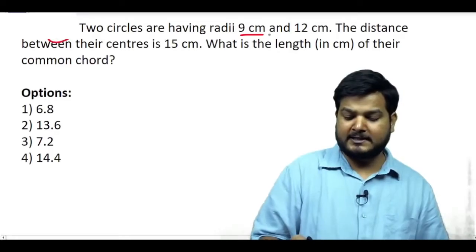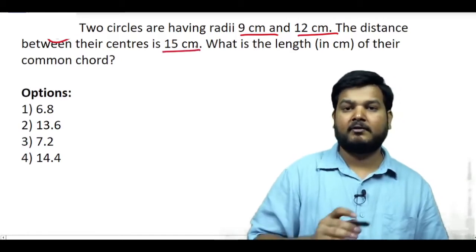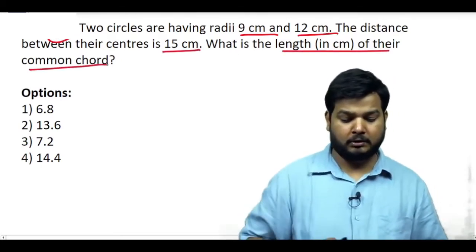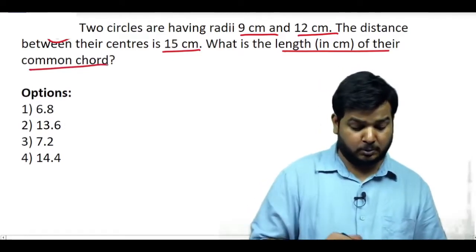Two circles are having radii 9 centimeter and 12 centimeter. The distance between the centers is 15 centimeters. What is the length of their common chord? So it's pretty simple - it is going to be double of 7.2 and that is going to be 14.4.